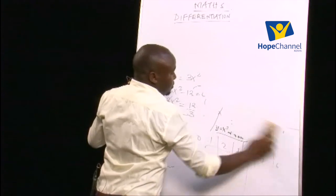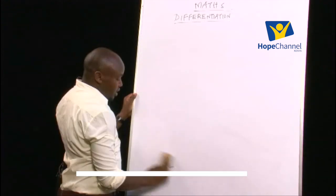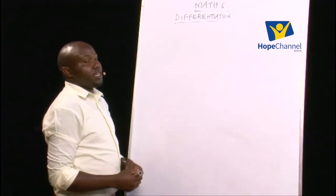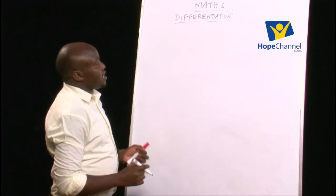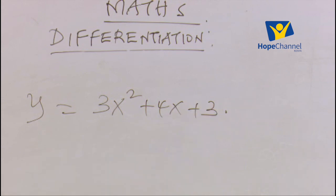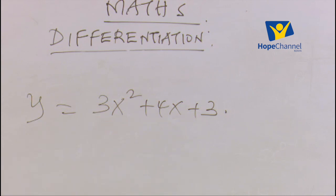Maths is not complete until you do homework and get it right or wrong. If you get it right, move forward; if wrong, find a way to correct it. Now, your homework: sketch the curve y = 3x² + 4x + 3. Once you sketch it, take a photo or screenshot and send it to us via our social media platforms. We'll give you feedback. Stay tuned and be blessed.